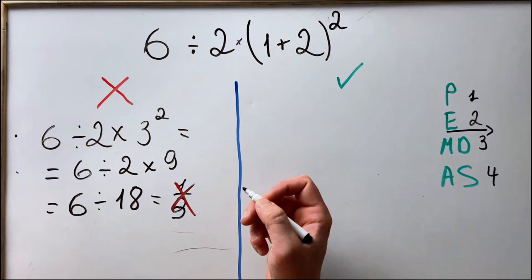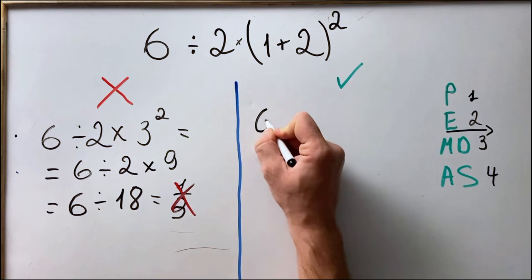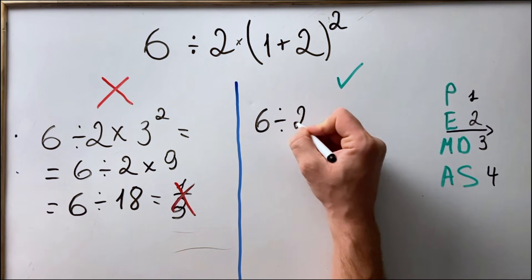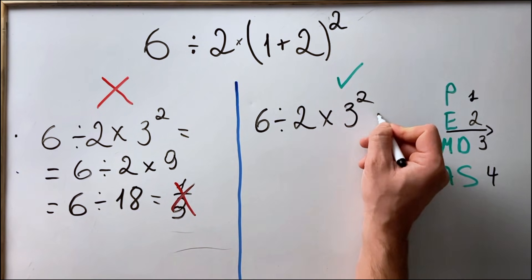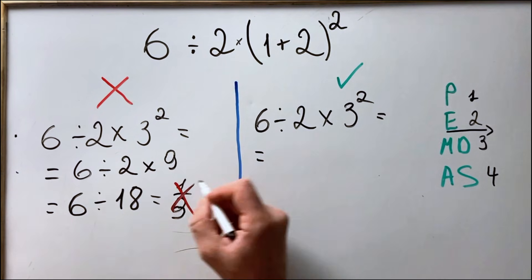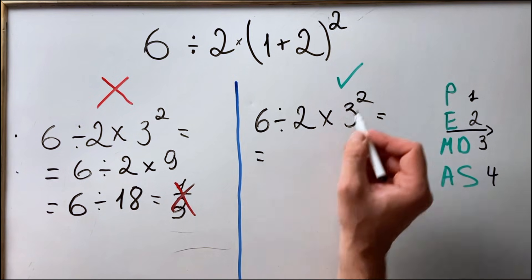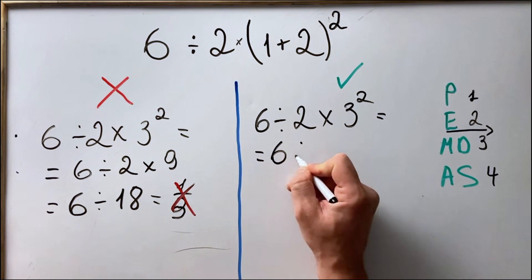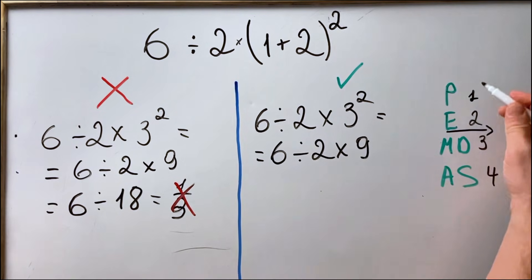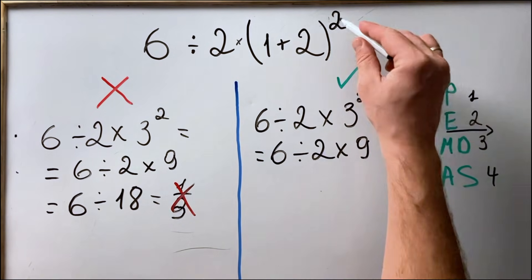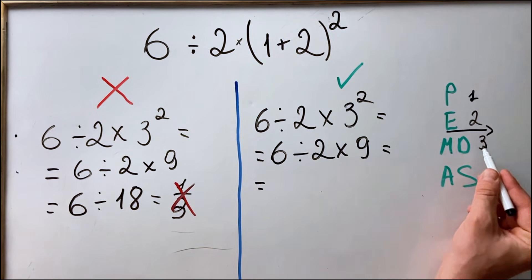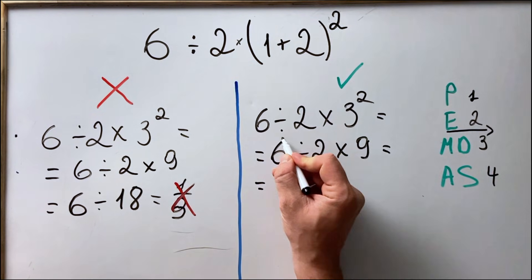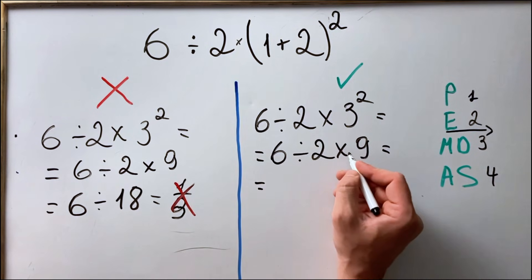So the correct way of solving this type of equation would be: 6 divided by 2, and we have the parenthesis squared, because first we do the parenthesis then the exponent. And now what we have is multiplication and division from left to right. So from left to right we do first division and then multiplication.